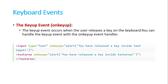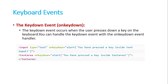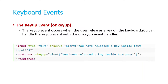We also have the onkeyup event. This occurs when the user releases a key on the keyboard. So onkeydown is for when somebody presses a key, and onkeyup is for when the user releases the key. We can use this just like the previous events.